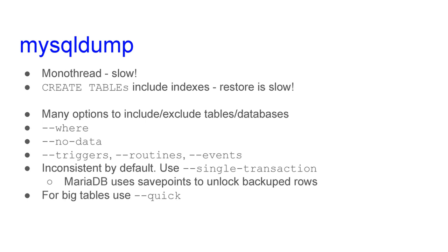There are many options which allow you to include or exclude some databases or tables. There is a --where option to dump the result of a SELECT. There is --no-data to dump only the structure and not the contents — useful because it's always good to have a backup of table structure. There are options to include or exclude triggers, routines, and events. Typically you should use the --single-transaction option, which dumps data in a single transaction so it will be consistent.